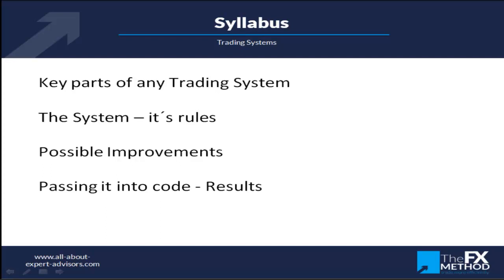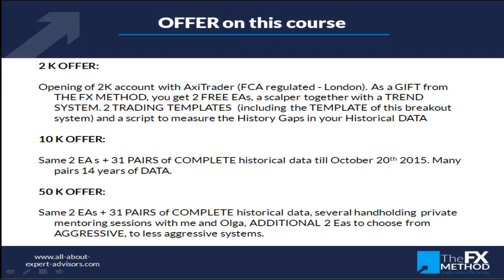A trading system has very specific parts. I'll give you four legs of this trading system: the entry rules, the exit rules, two filters, and position management. I'm not going to cover money management today — we'll keep it simple — but I will give you the very specific rules. If you want the template, open an account with Axitrader and you'll get two free EAs plus this template included. I'll show you how it looks on the platform.